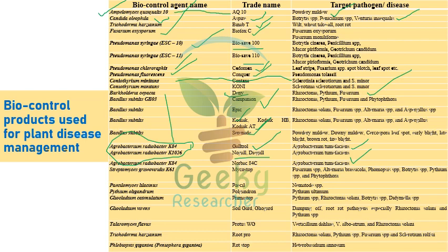Paecilomyces lilacinus, trade name Paeciladryl, is recommended for nematodes. Pythium oligandrum, trade name Polygandron, is recommended against Pythium ultimum. Gliocladium virens, trade name SoilGard or Gliocladium, is recommended against damping-off diseases and root rot pathogens, especially Rhizoctonia solani and Pythium species.